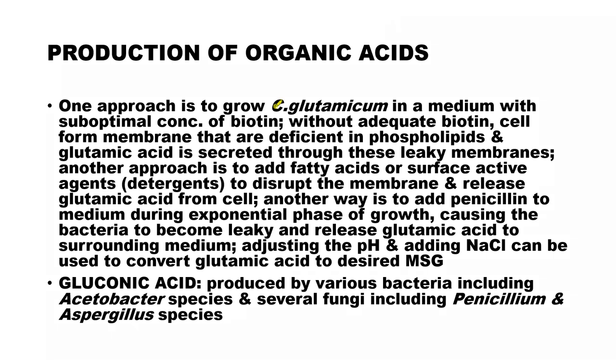One approach is to grow Corynebacterium glutamicum in a medium with suboptimal concentration of biotin. Without adequate biotin, cells form membranes that are deficient in phospholipids and glutamic acid is secreted through the leaky membrane. By limiting biotin in the medium, the cell membrane formed has less phospholipid and naturally becomes fragile or leaky, so whatever amino acid is produced is secreted to the surrounding medium.